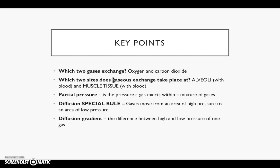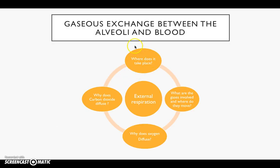Key points — these questions are going to be on your Cornell Notes. Which two gases exchange? Oxygen and carbon dioxide. Oxygen gets breathed into the lungs and is in the alveoli; we need to get the oxygen into the bloodstream. Carbon dioxide needs to go from the blood to the alveoli to be breathed out, and we also need to remove carbon dioxide from the muscle into the bloodstream and get oxygen into the muscle from the blood. Which two sites does gaseous exchange take place at? At the alveoli with the blood, and the muscle tissue with the blood.